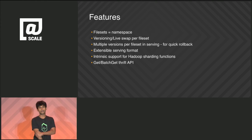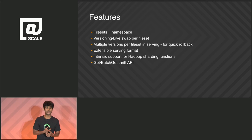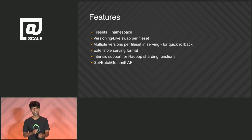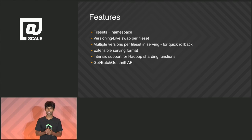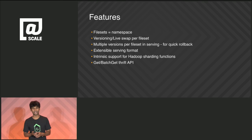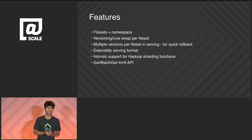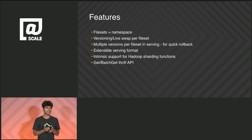I'll talk about some of the features we implemented. File sets are namespaces, akin to tables in traditional database terminology — you can namespace your data by file set. We do a live swap as a new version is uploaded, on a per-file-set basis. You can have multiple versions of a file set in serving, which is great if you want the ability to roll back quickly due to a software bug causing data corruption. The serving format we currently use is HFiles but it's extensible. There's intrinsic support for Hadoop sharding functions, and we also provide a batch get Thrift API which allows batching keys for higher throughput.